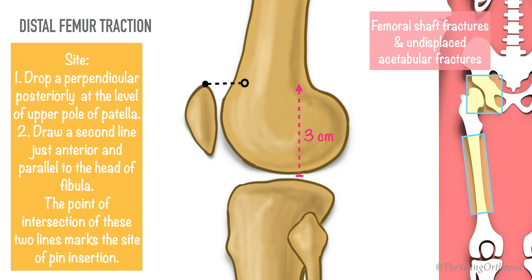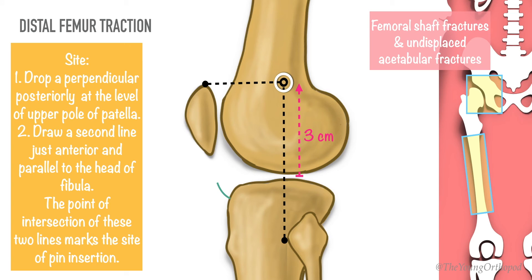For marking the entry site on a relaxed and extended knee, draw a line posteriorly at the level of the upper pole of the patella, perpendicular to the long axis of the femur. Draw a second line from below upwards just anterior to the head of the fibula, parallel to the long axis of the femur. The point of intersection of these two lines is the site of insertion of the Steinmann pin. This avoids injury to the lateral knee joint capsule, which reaches 2 centimeters above the knee joint, and also avoids injury to the distal femoral physis in children.